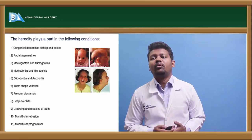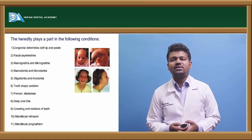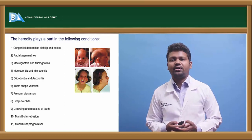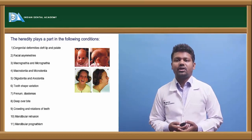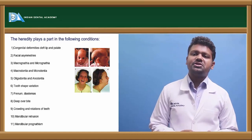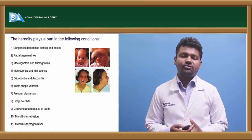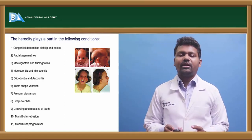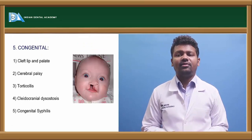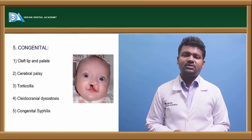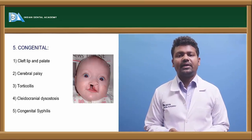Heredity plays a part in the following conditions: congenital deformities, cleft lip and cleft palate, facial asymmetries, micrognathia and prognathia, microdontia and macrodontia, oligodontia and anodontia, tooth shape variations, frenum, deep overbite, crowding and rotations of teeth, mandibular retrusion and mandibular prognathism. Congenital defects can include cleft lip and palate, cerebral palsy, torticollis, cleidocranial dysostosis, and congenital syphilis.